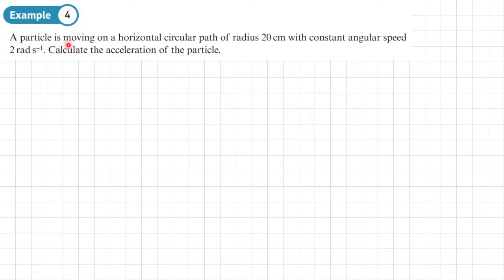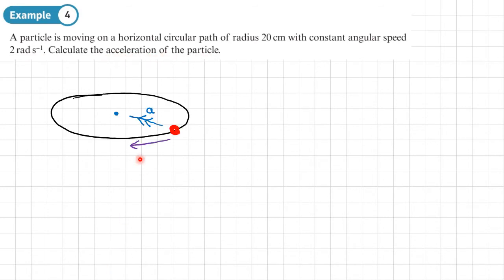Example 4: a particle is moving on a horizontal circular path of radius 20 centimeters with constant angular speed 2 radians per second. Calculate the acceleration of the particle. Since we have the angular speed, we'll use the formula: acceleration equals the radius times by the angular speed squared, omega squared.